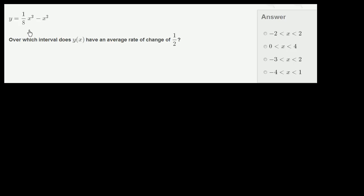y equals 1/8 x to the third minus x squared. Over which interval does y of x have an average rate of change of 1/2? So let's go interval by interval and calculate the average rate of change.